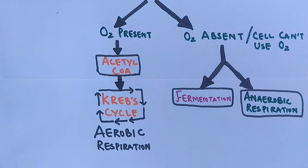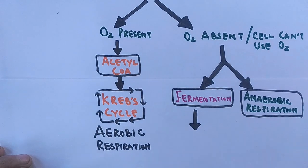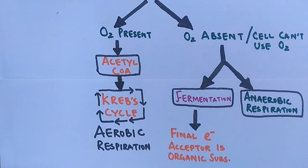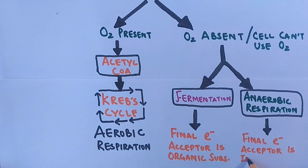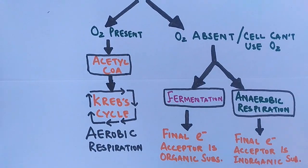What makes the difference between fermentation and anaerobic respiration, since both occur without oxygen? It's the difference in the final electron acceptor. In fermentation, the final electron acceptor is an organic substance like lactic acid or ethanol, whereas in anaerobic respiration, the final electron acceptor is an inorganic substance like nitrate or sulfate — but never oxygen, unlike aerobic respiration.